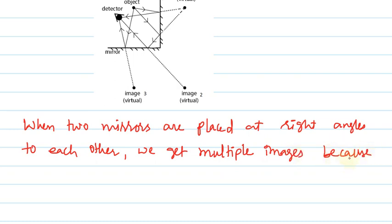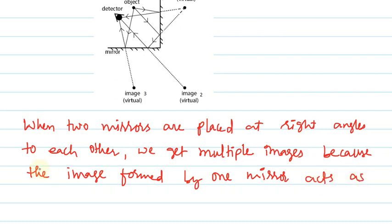the image formed by one mirror acts as an object for the second mirror, and further images are formed.